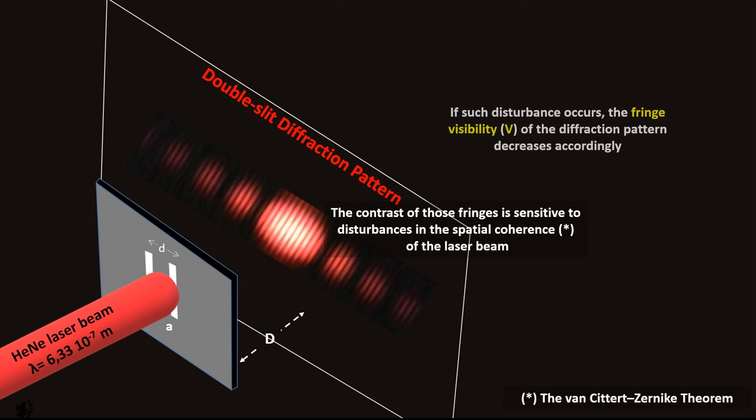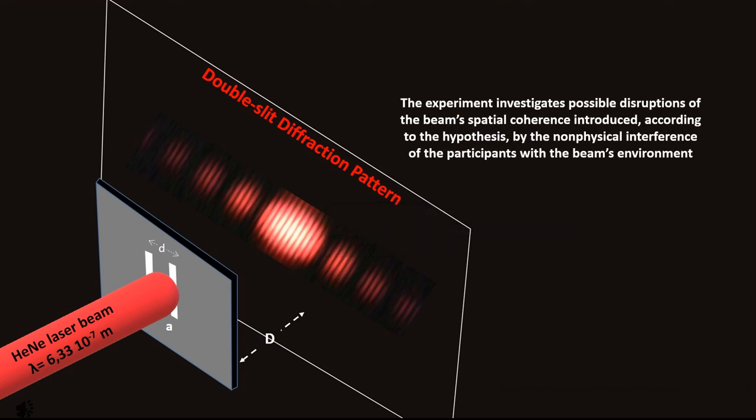If such a disturbance occurs, the fringe visibility V of the diffraction pattern decreases accordingly. The experiment investigates possible disruptions of the beam's spatial coherence introduced, according to the hypothesis, by the non-physical interference of the participants with the beam's environment.